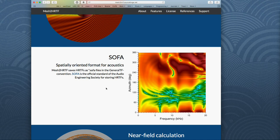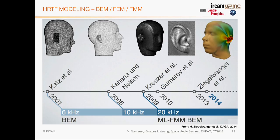SOFA (AES69 standard) is now a well-established format. MPEG-H accepts SOFA as an input format for HRTFs — we were able to partner with the MPEG-H standardization, which is quite nice. It's an open standard with many tools available. You just need a good head scan to set up the environment and start working on HRTF simulation.